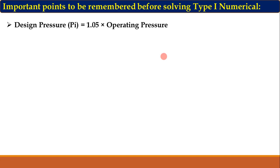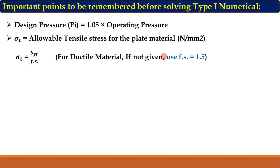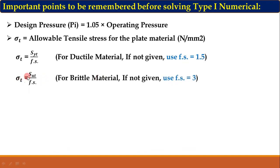The second important point is sigma_t, the allowable tensile stress for plate material in N/mm². Sometimes this is directly given, and you can use it as is. If it is not given, calculate it using sigma_t = Syt / fs for ductile material, or sigma_t = Sut / fs for brittle material.